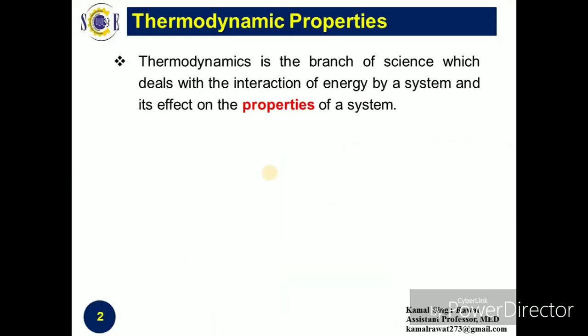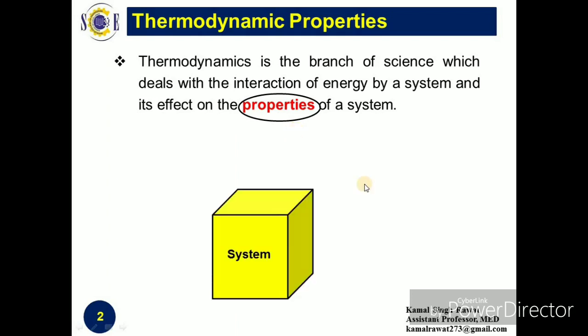In the last lecture, we studied that Thermodynamics is a branch of science which deals with the interaction of energy by a system and its effect on the properties of a system. The properties of a system means characteristics of a system which provide some information about the system. For example, consider a system whose color is yellow — yellow color is a characteristic of this system as it provides some information about it. If this system has some specific type of smell, then smell will also be a characteristic of this system.